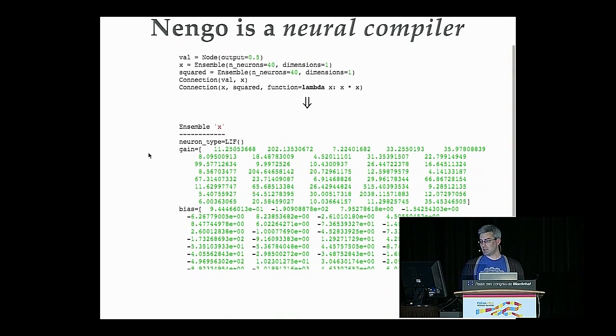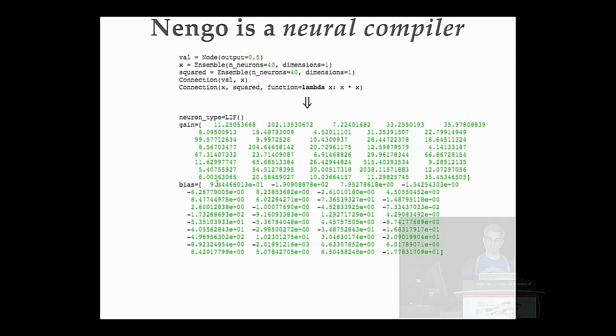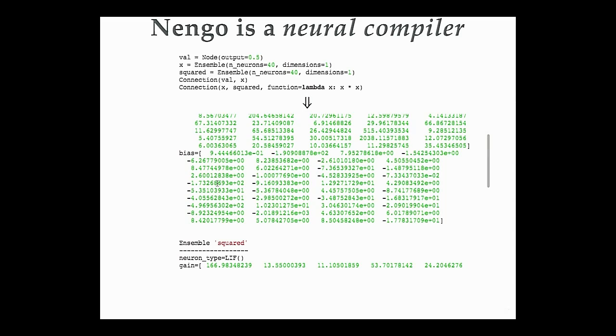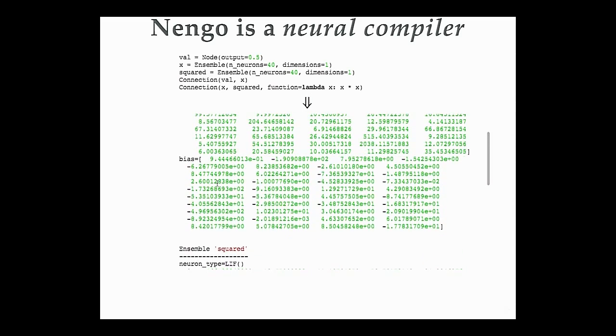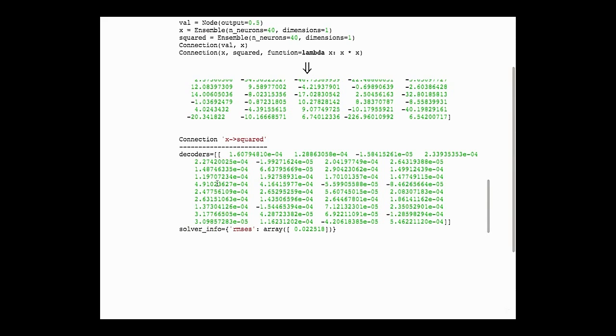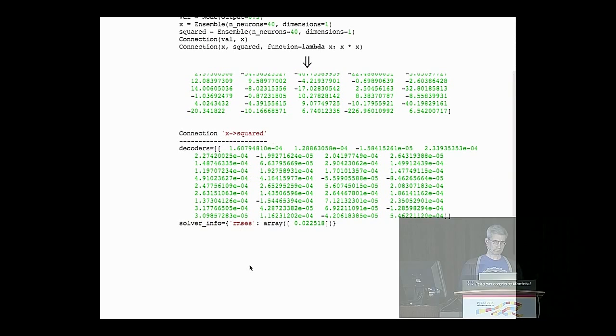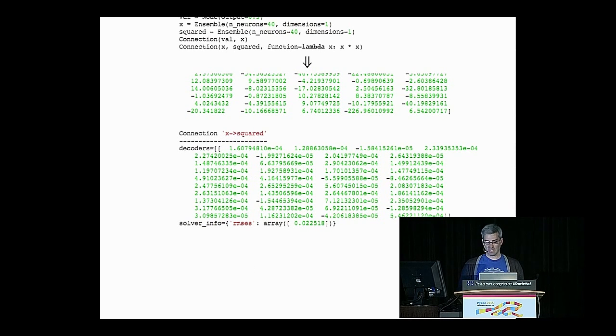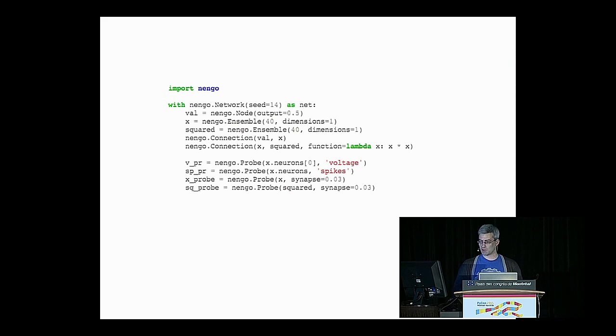And under the hood, Nengo generates both randomly and through some optimization processes, a bunch of numbers that would be a huge pain to figure out by hand. So the gain and bias on these neurons, which tells you how much current to inject, the decoding weights on this connection to actually implement that squared function.